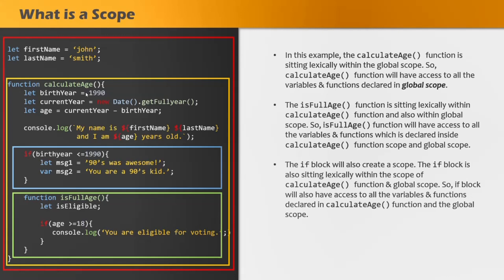This is all I wanted to cover in this lecture before explaining how a scope chain is created during the creation phase of execution context. I just wanted to make sure you understand the different types of scopes in JavaScript. As mentioned earlier, we have already covered this topic in a previous lecture, so you can go through that to understand it practically. In the next lecture, you will understand how the scope chain gets created. Thank you for listening and have a great day.